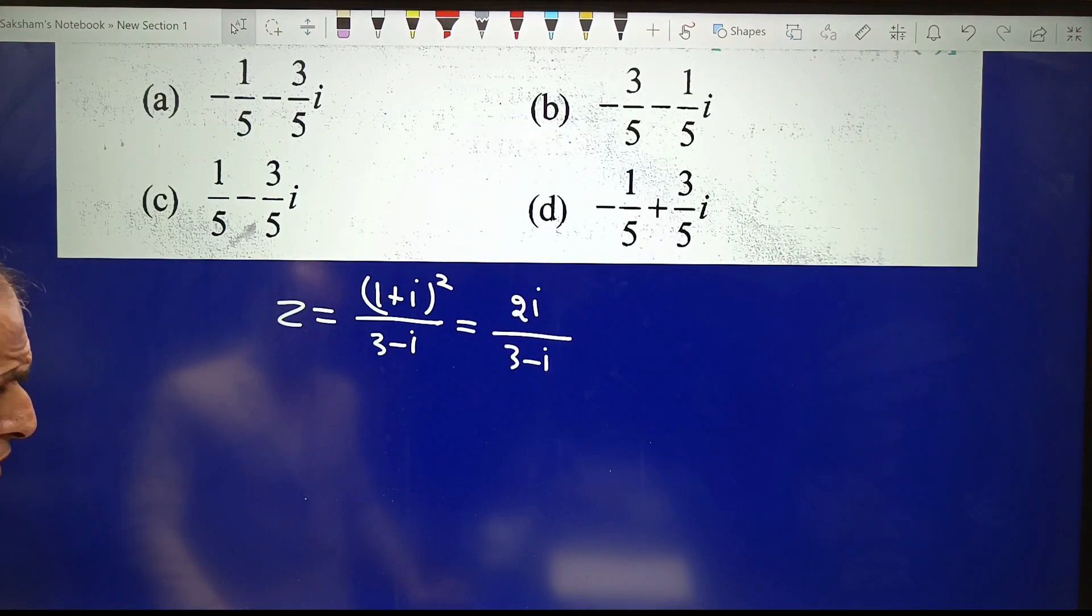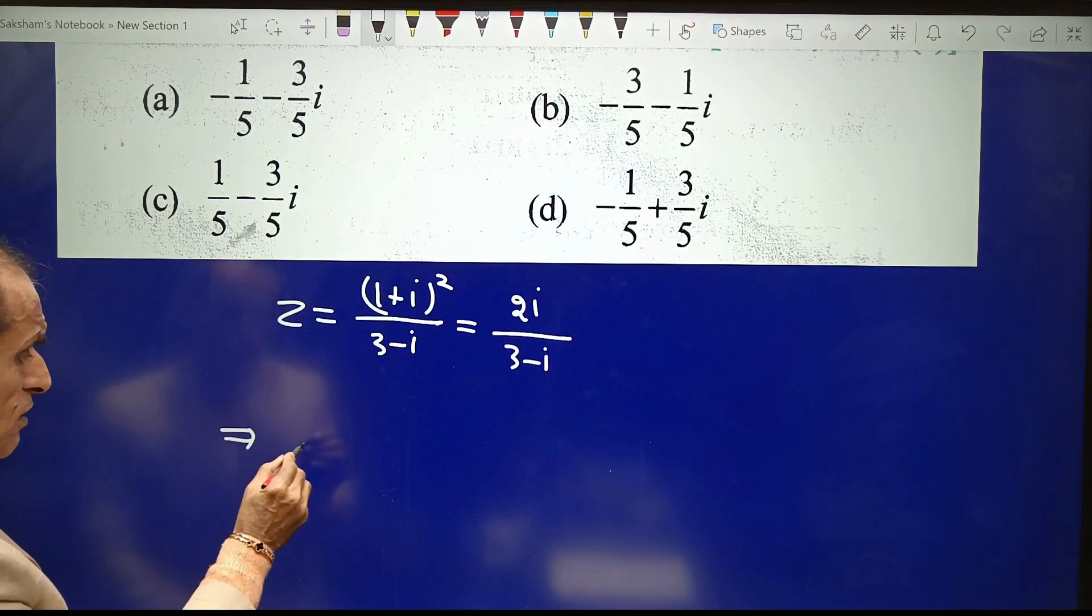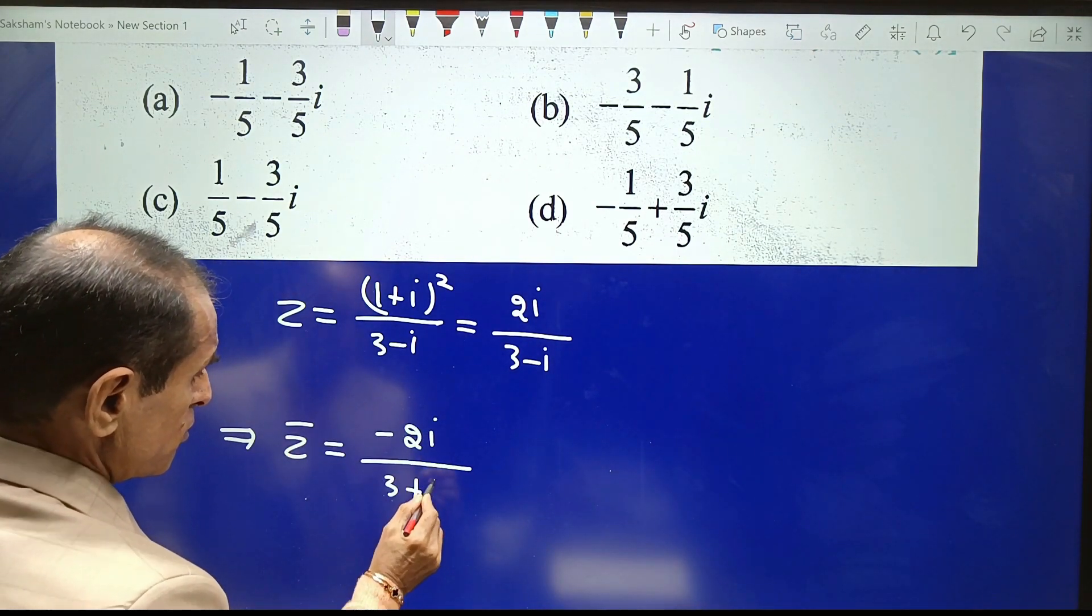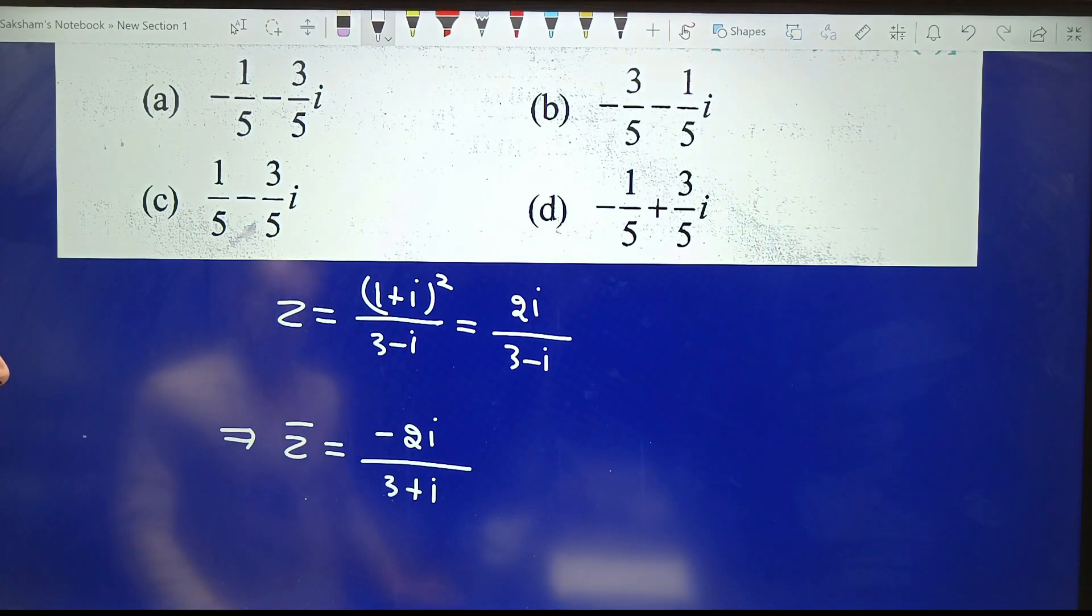This means Z̄ = -2i/(3+i). But I want the value of Z̄ in the form A + Bi.